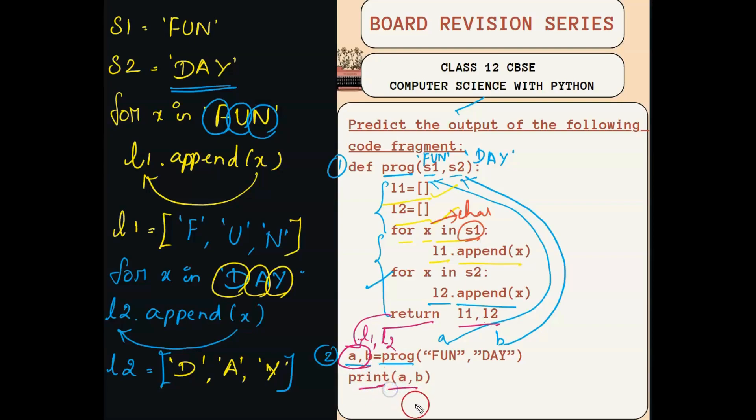Next it is printing a, b. So how is it getting printing a, b? First a will be getting printed. A is nothing but [F, U, N]. And close the list. B, so what is your b? Open the list, and b is nothing but [D, A, Y]. And close the list. So this is your output for this program.